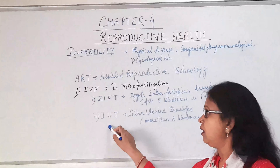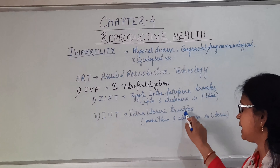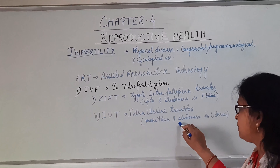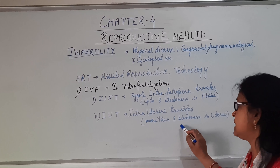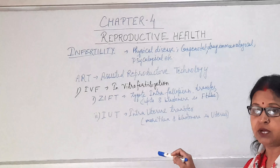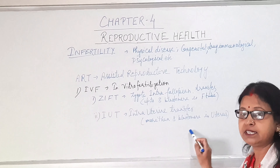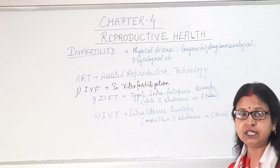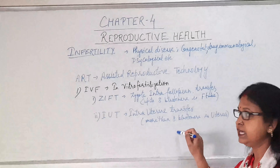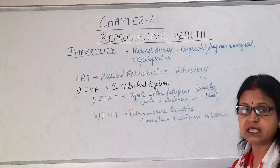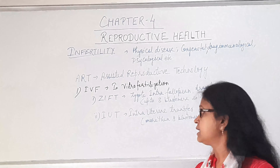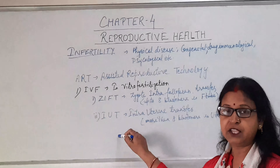The second type is IUT, or Intrauterine Transfer. In this case, when the zygote becomes more than 8 cells — that is, beyond the 8 blastomere stage — it is more mature and will be transferred into the uterus of the mother, not the fallopian tube. That is why it is known as Intrauterine Transfer. Depending upon the stage of transfer, it is classified as ZIFT or IUT.